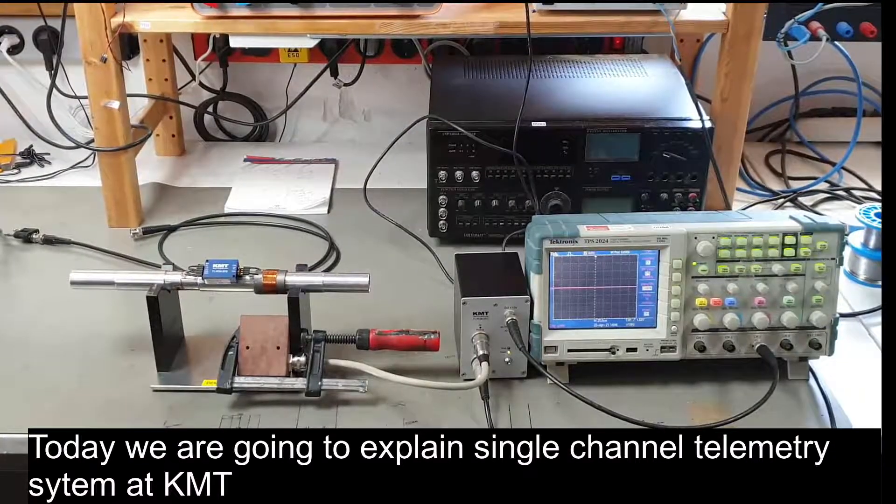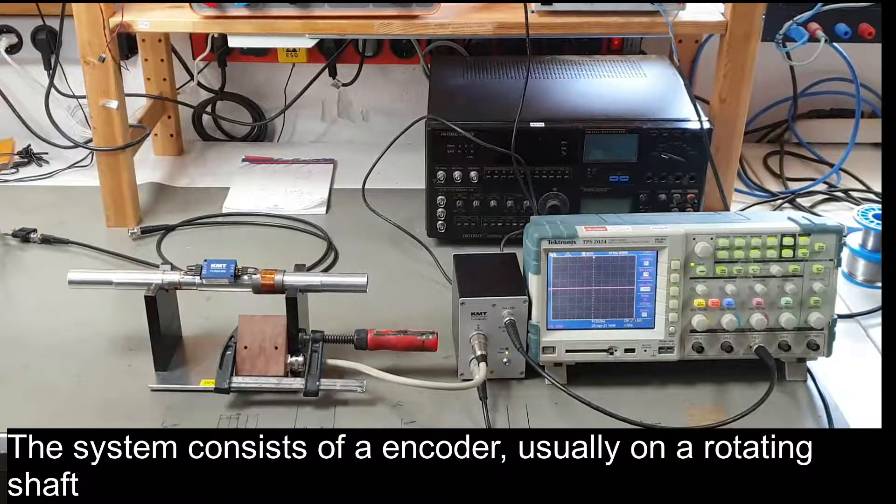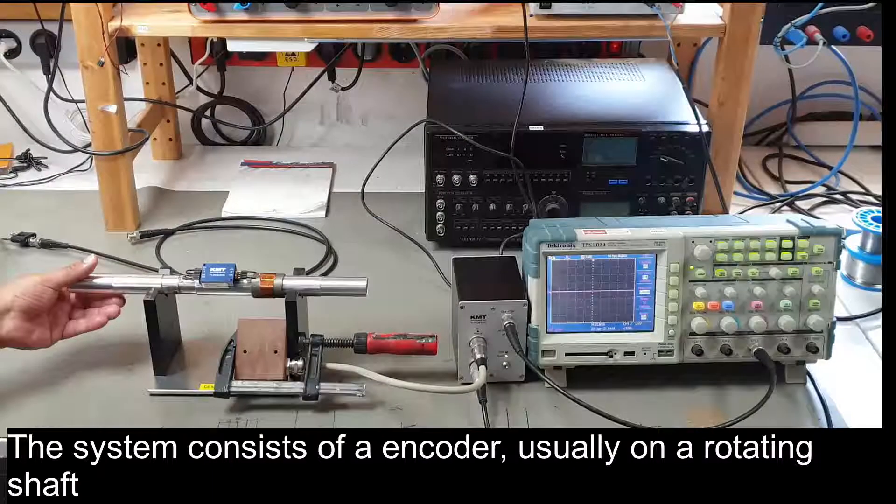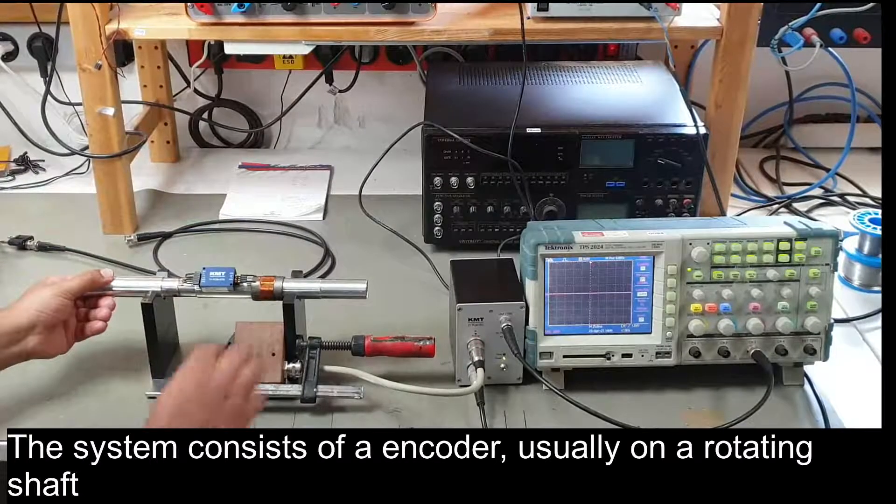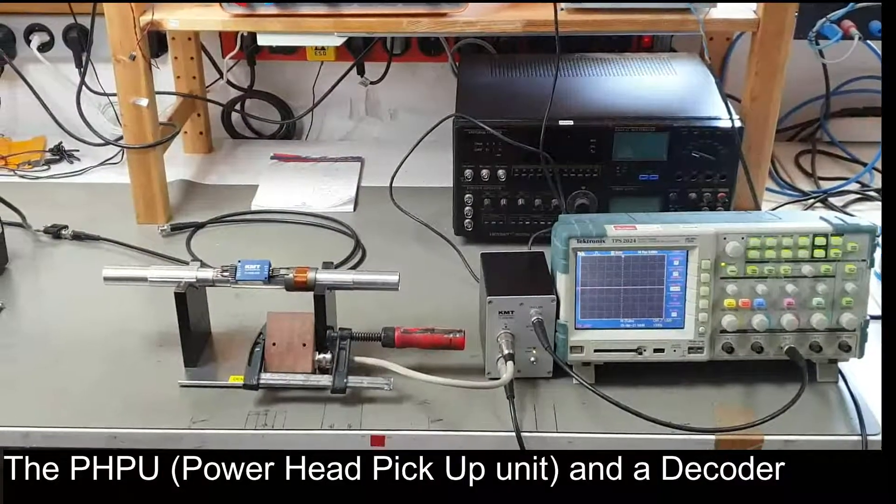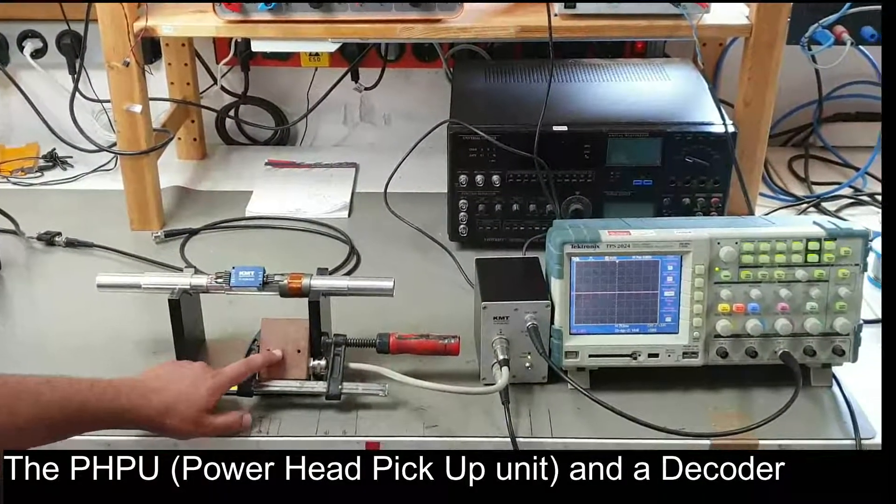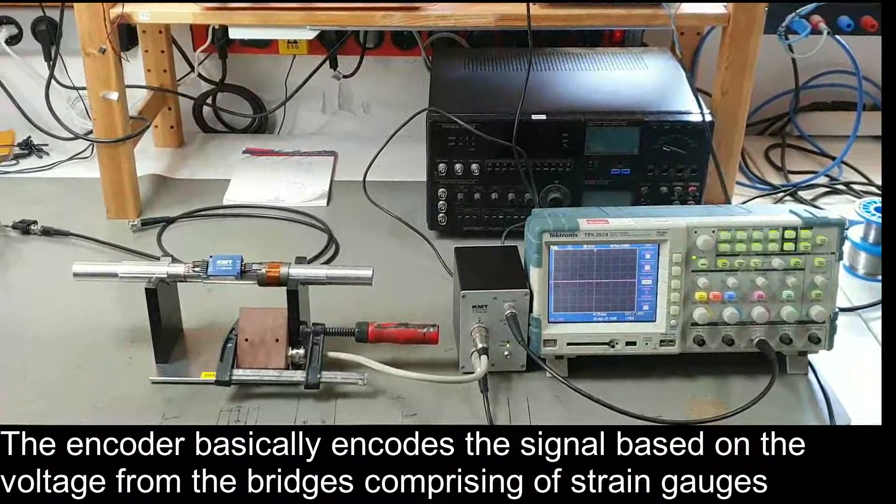Today we are going to explain single channel telemetry systems at KMT. The system consists of an encoder usually on a rotating shaft, a PHP power head and pickup unit, and a decoder.